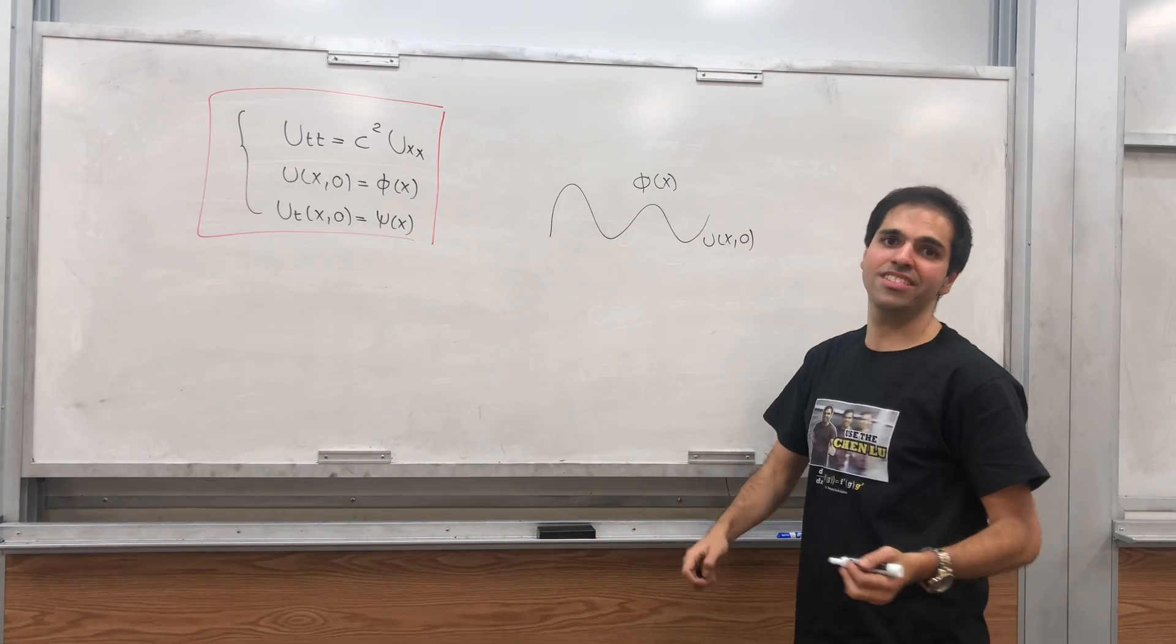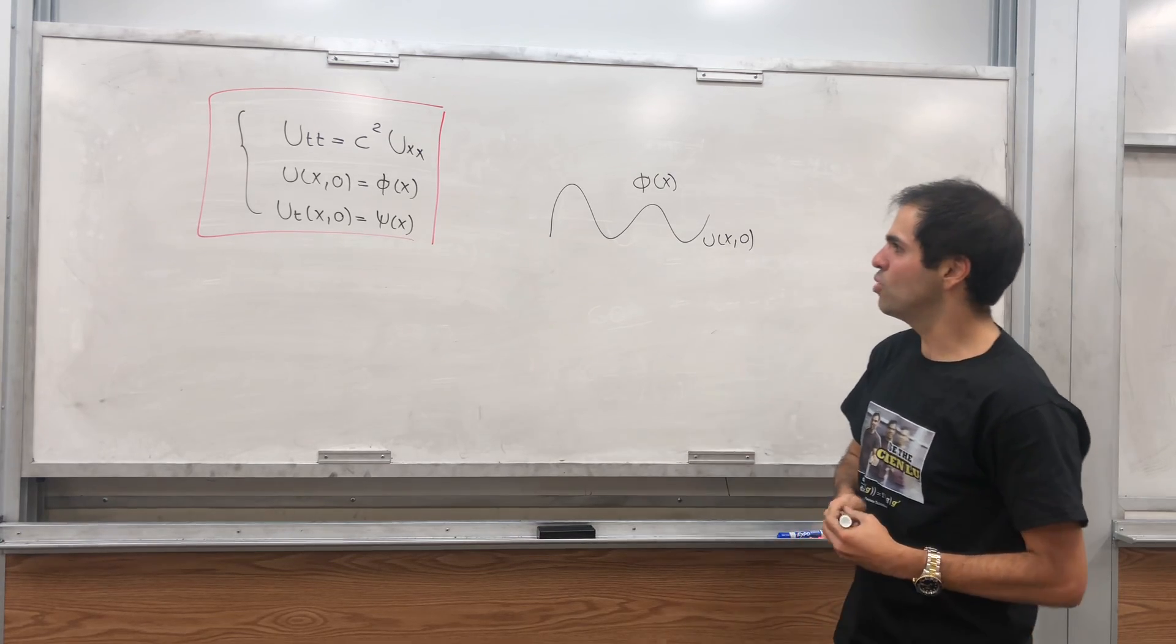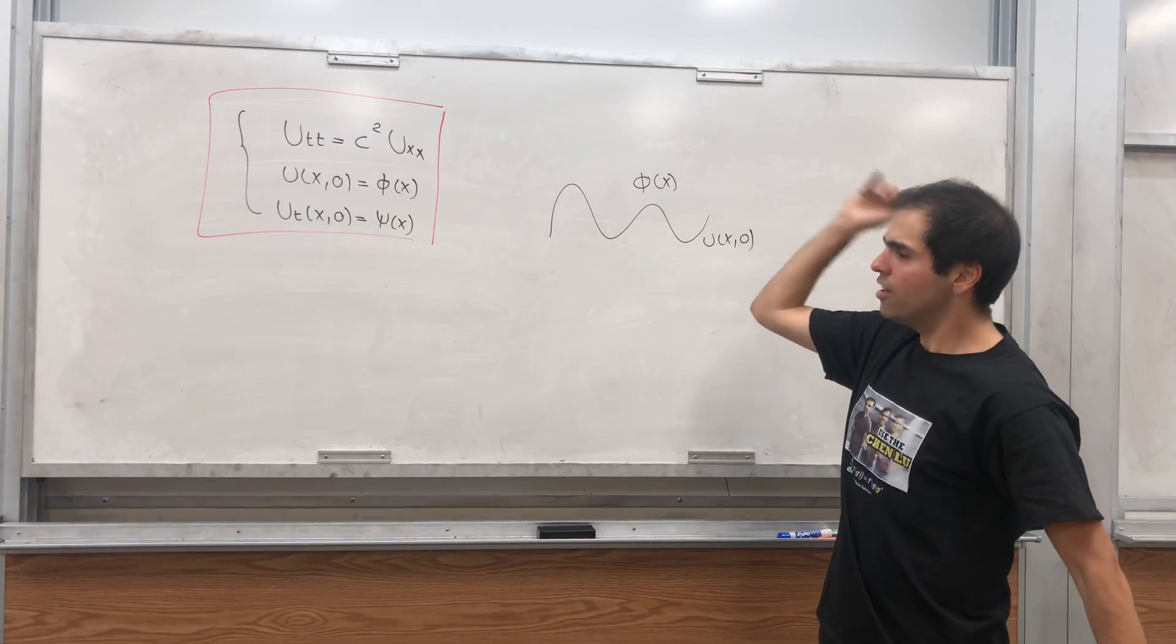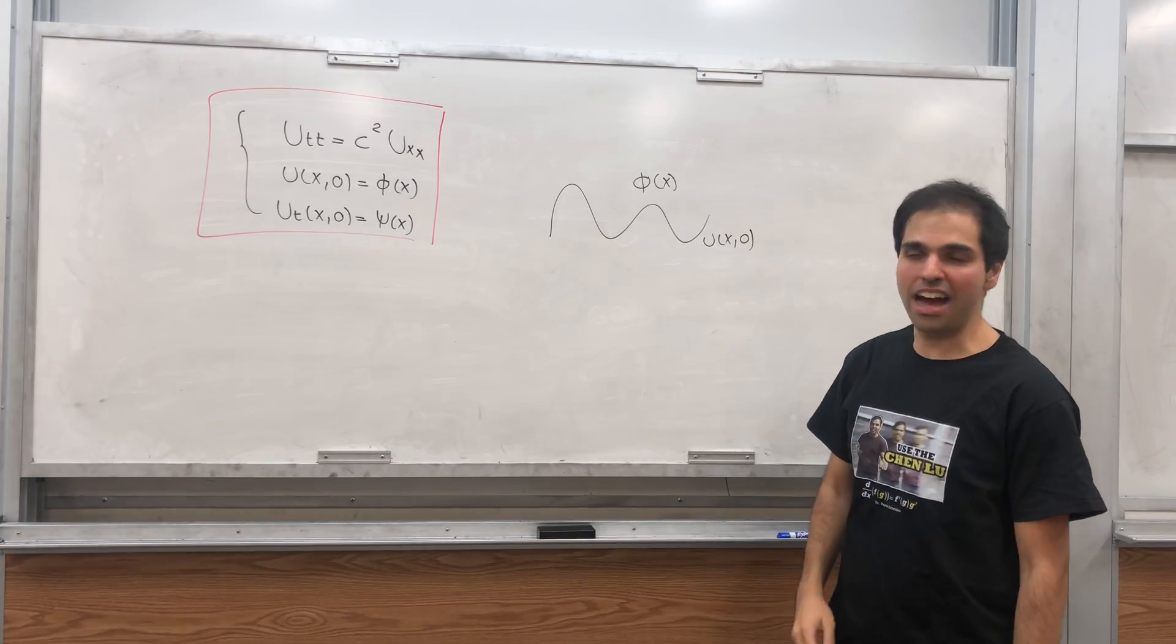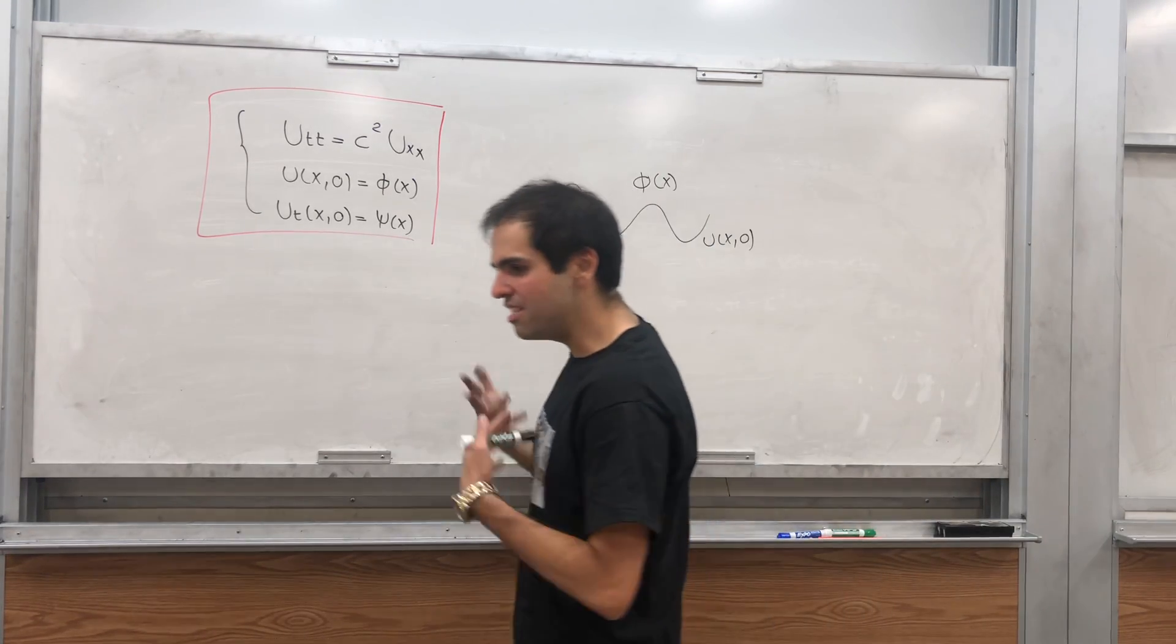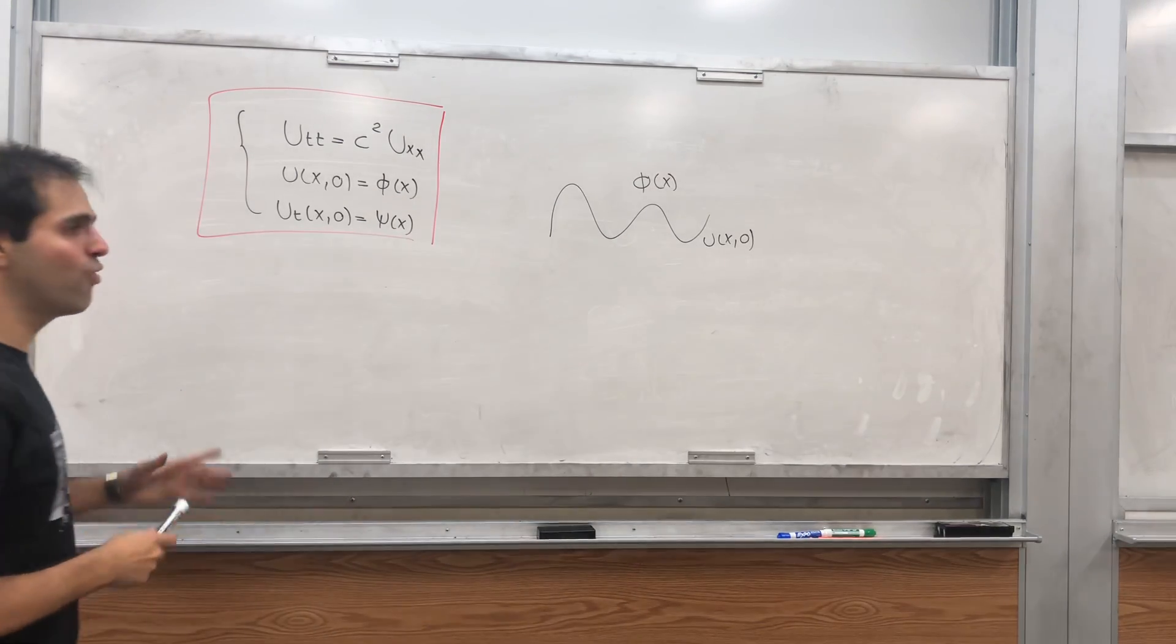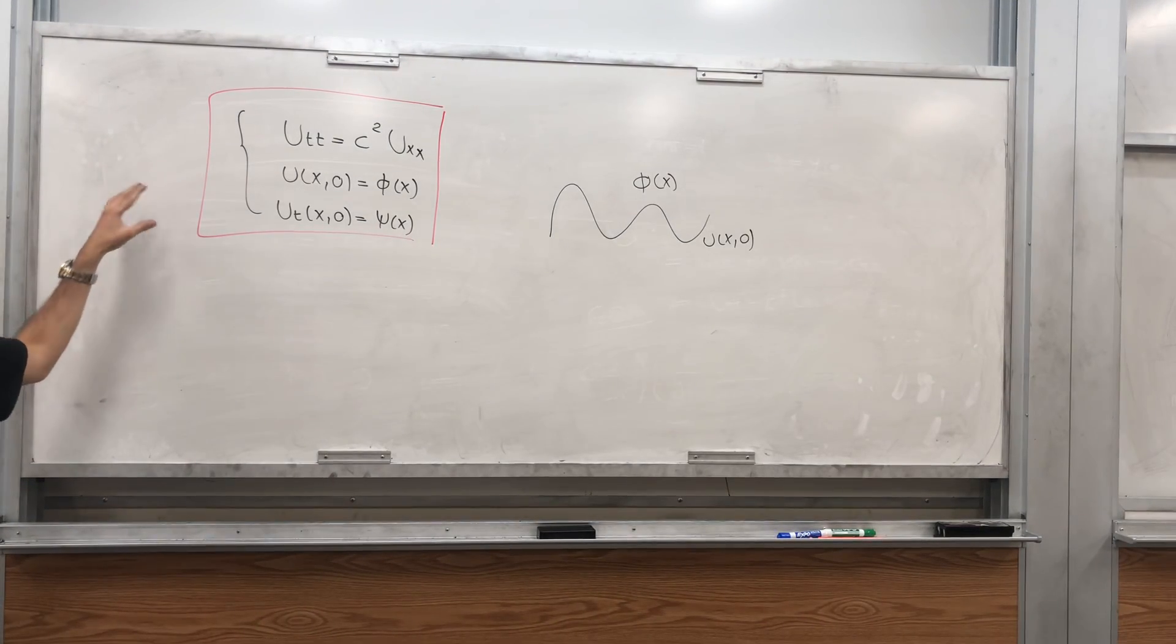And moreover, the initial velocity is psi of x. So assume at every point, we sort of throw the wave at speed psi of x. And the cool thing is we can have a very explicit formula and very elegant formula for the solution for this.